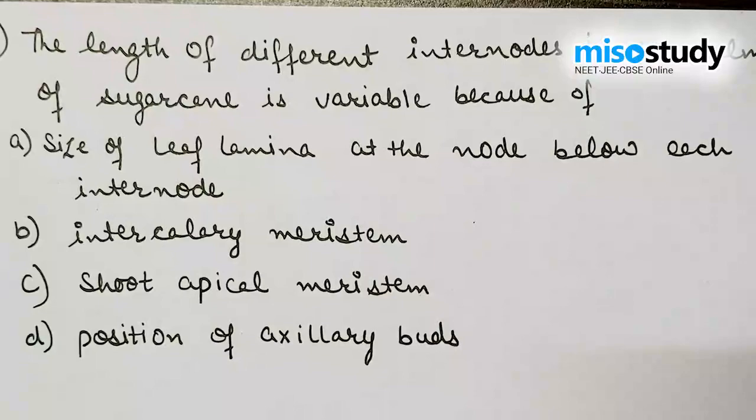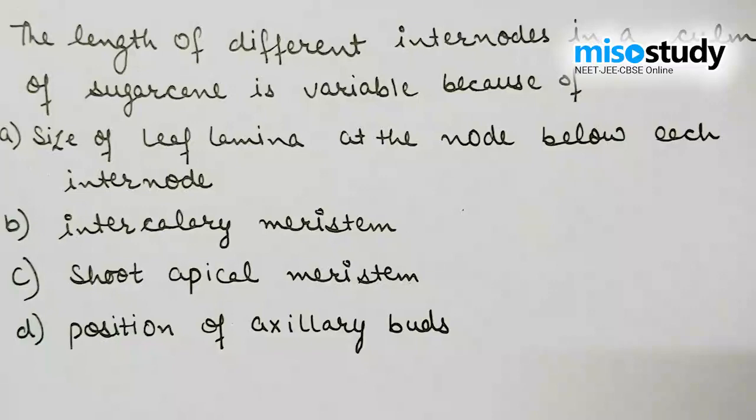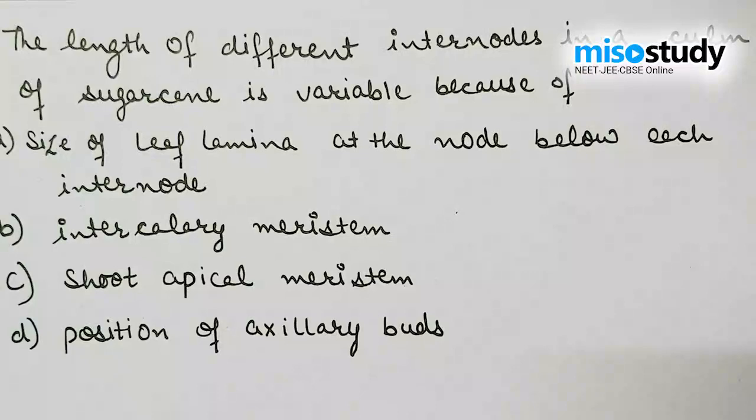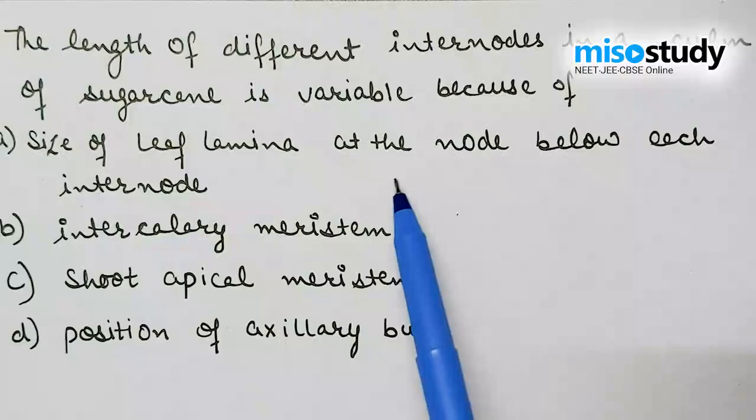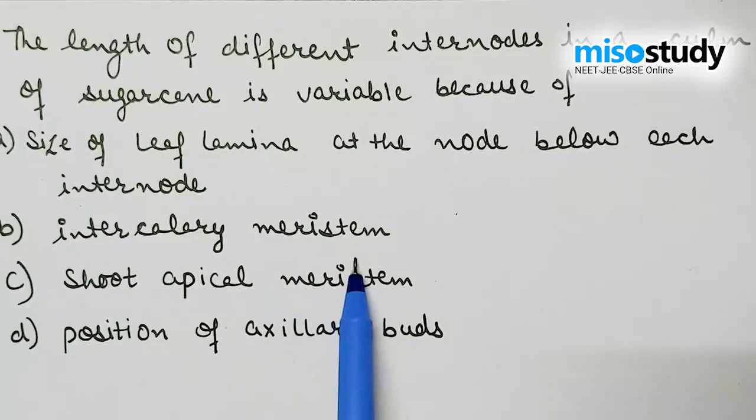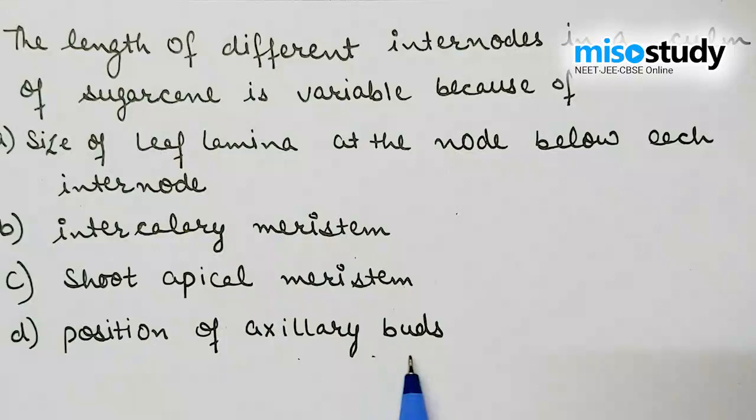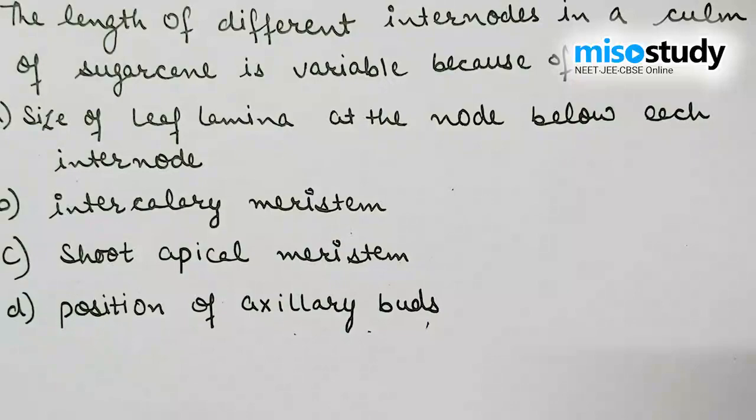The first question is: the length of different internodes in a culm of sugarcane is variable because of — option A: size of leaf lamina at the nodes below each internode; option B: intercalary meristem; option C: shoot apical meristem; option D: the position of axillary buds.